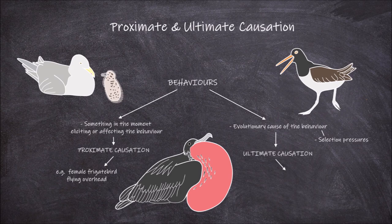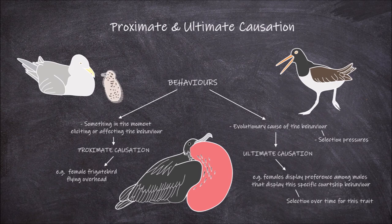An ultimate cause of this behavior could be that females display a preference among males that display the specific courtship behavior and mate with them. So over time, selection for this trait may have occurred due to a preference for it.